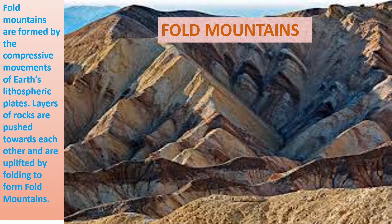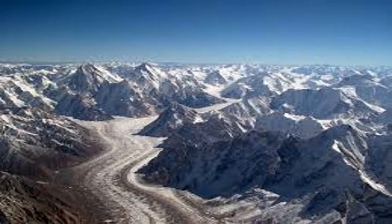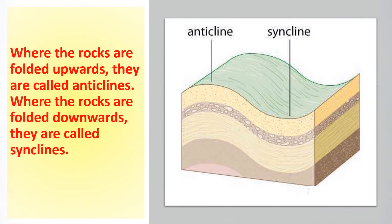You can understand this with an example: take a piece of paper and fold it, pushing it inward from both ends. Then open that paper and you can see different folds — some upper folds and some lower folds. The same process occurs during the formation of fold mountains. The upward folds are known as anticlines, and the folds which go downward are called synclines.